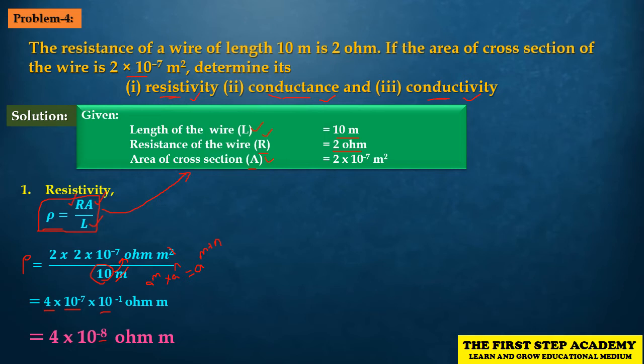Simplifying: 10⁻⁷ × 10⁻¹ = 10⁻⁸, giving us ρ = 4×10⁻⁸ Ohm metre. This is the resistivity value. So the answer to the first part is: resistivity ρ = 4×10⁻⁸ Ohm metre.